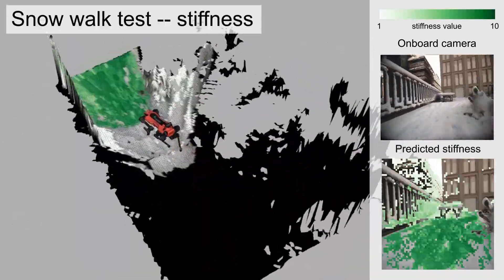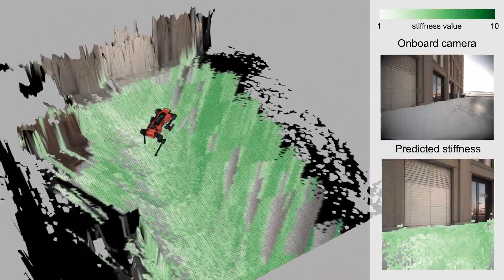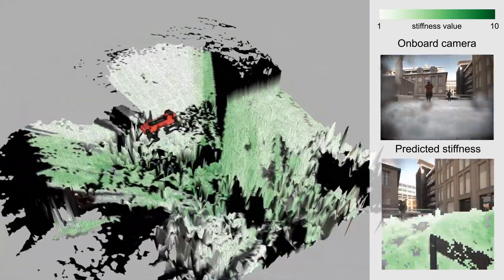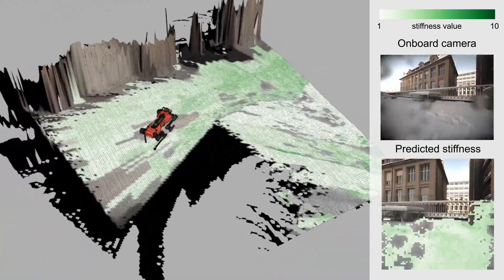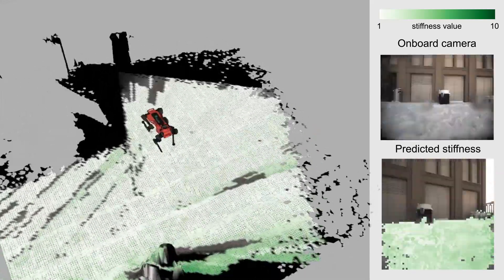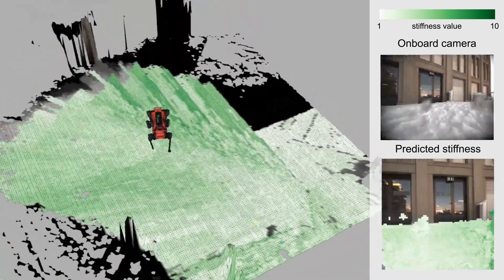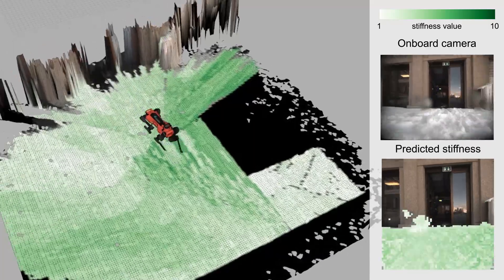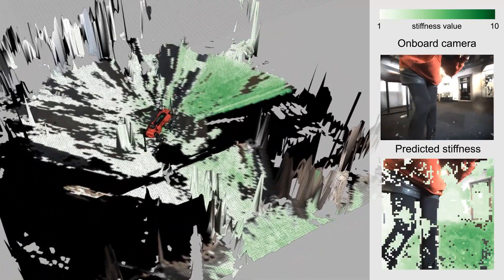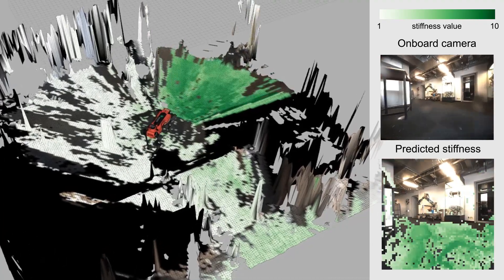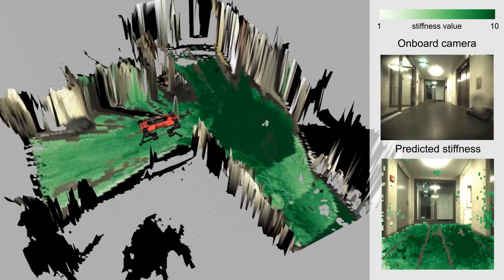The second one is the robot walking on grounds covered by heavy snow. Here we test the performance of the stiffness part. When the robot walks from the outdoor, soft, and snowy area to the indoor rigid ground, the stiffness prediction also rises significantly. Our model gives a reasonable confidence mask in both experiments.